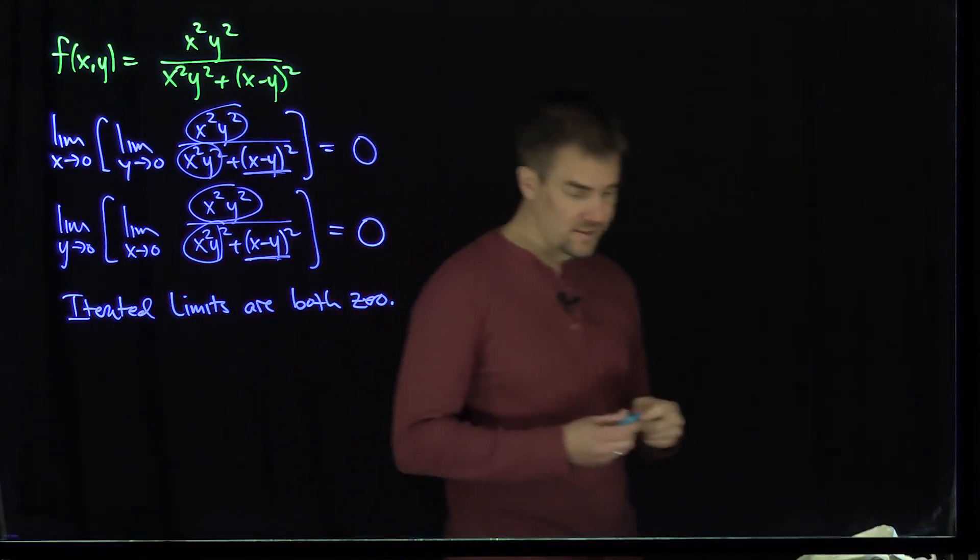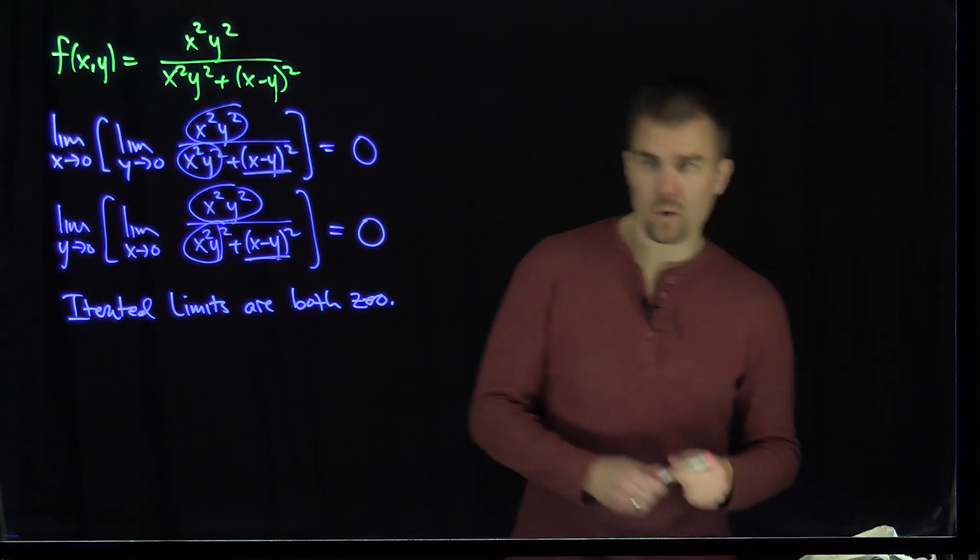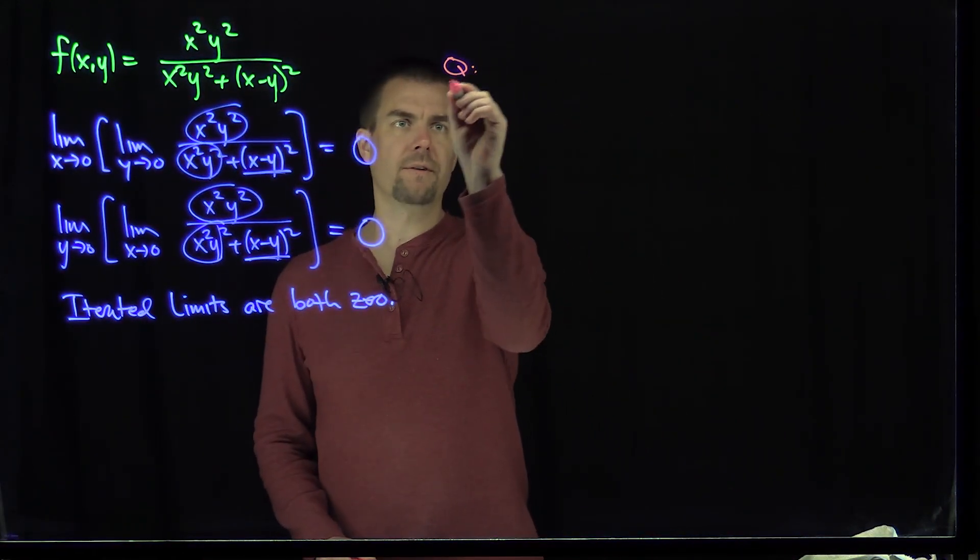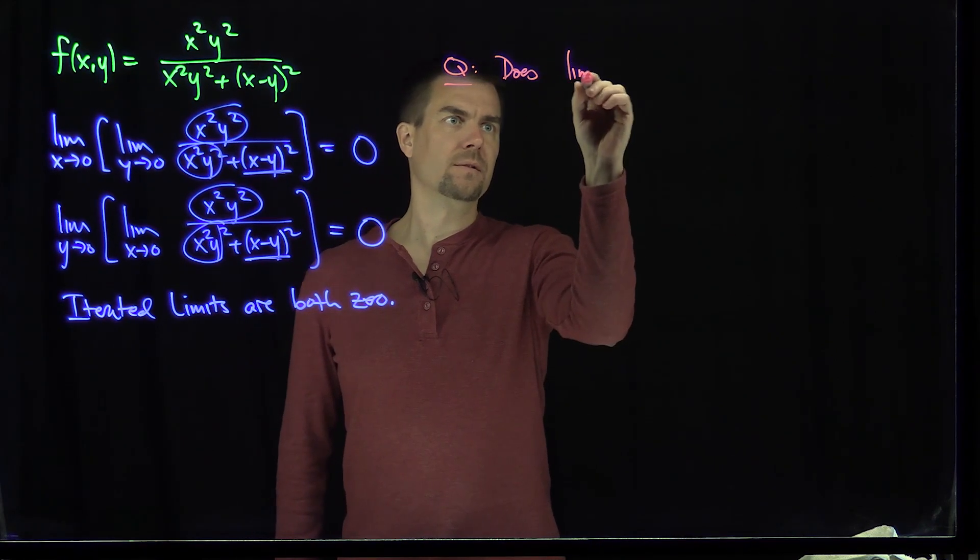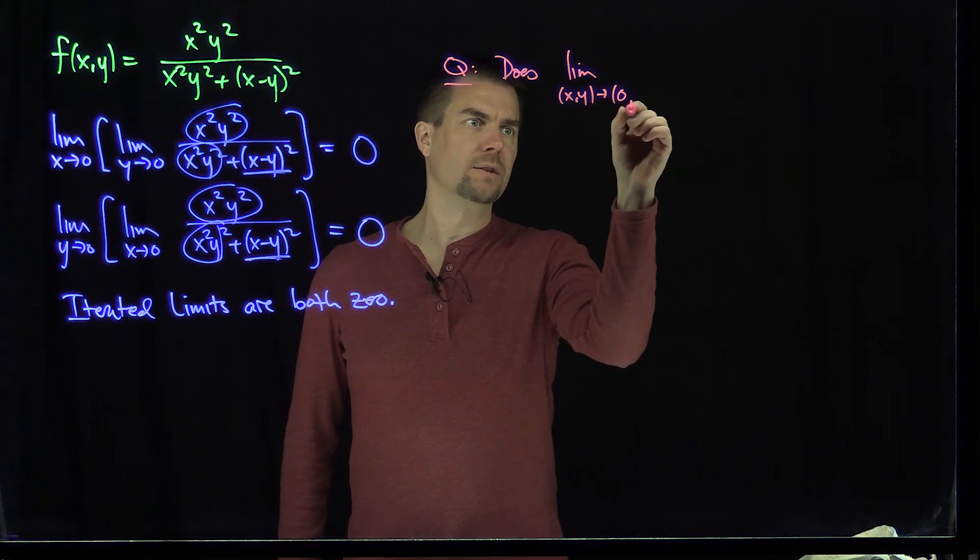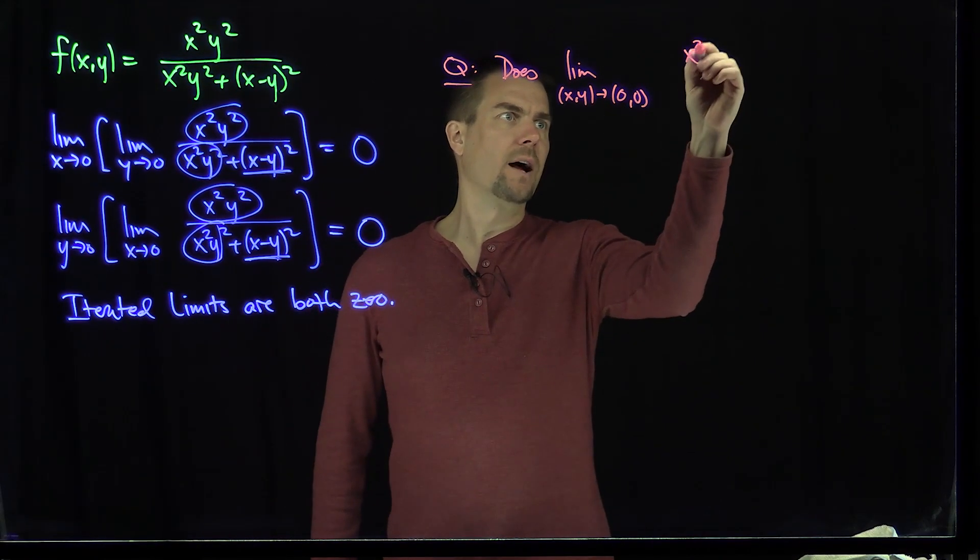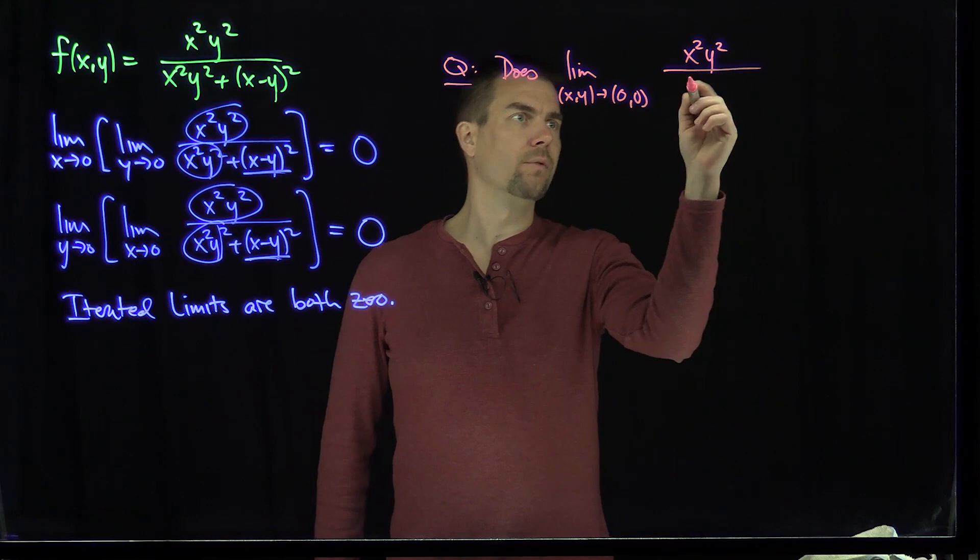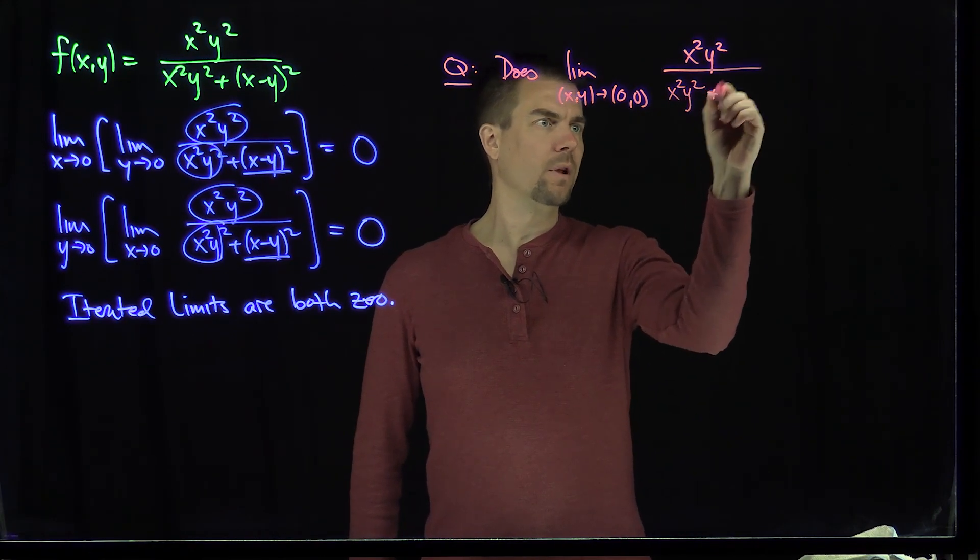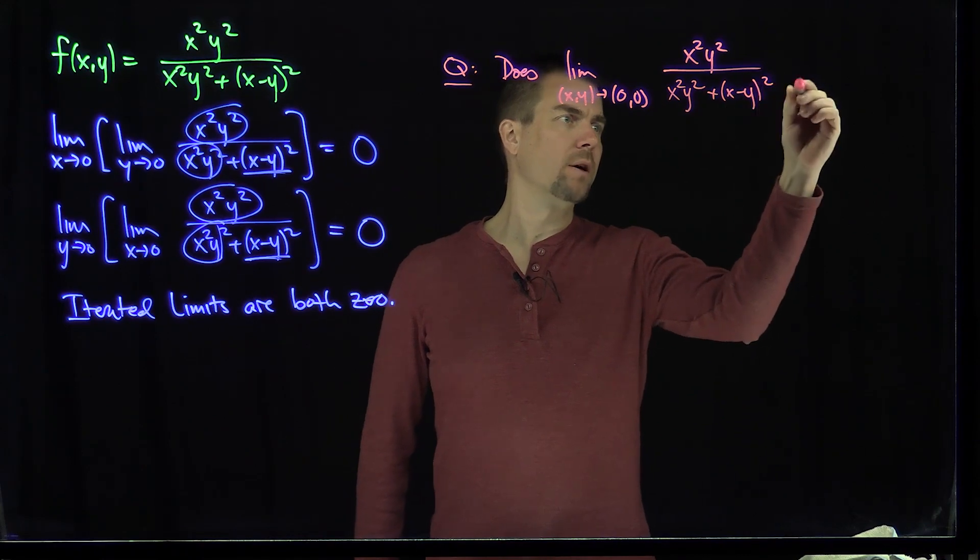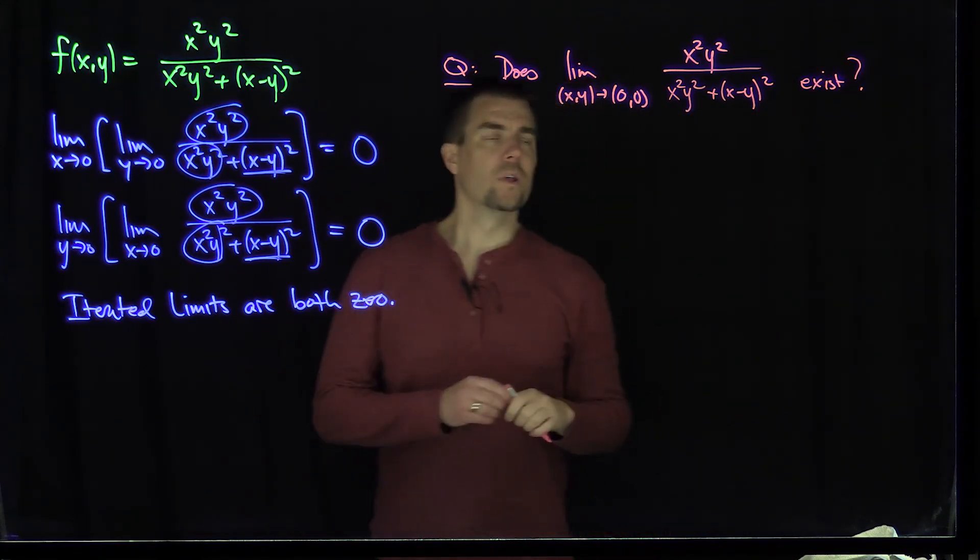But let's see that the limit itself does not exist. So now our question is, what is this limit? Does the limit as xy approaching zero zero of x squared y squared over x squared y squared plus x minus y squared exist?